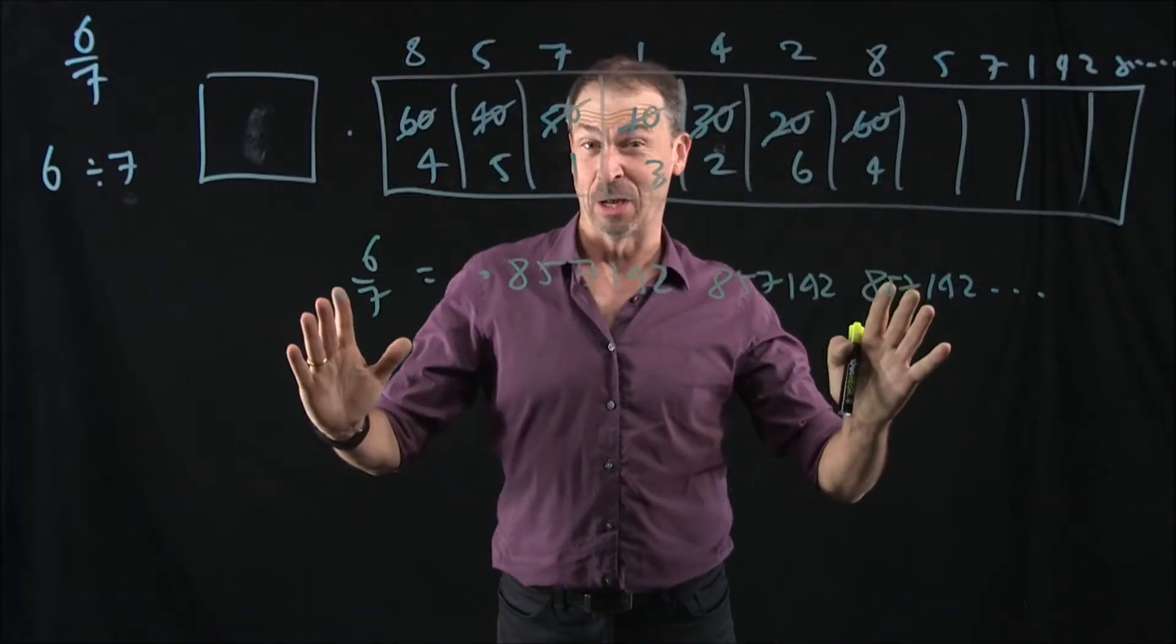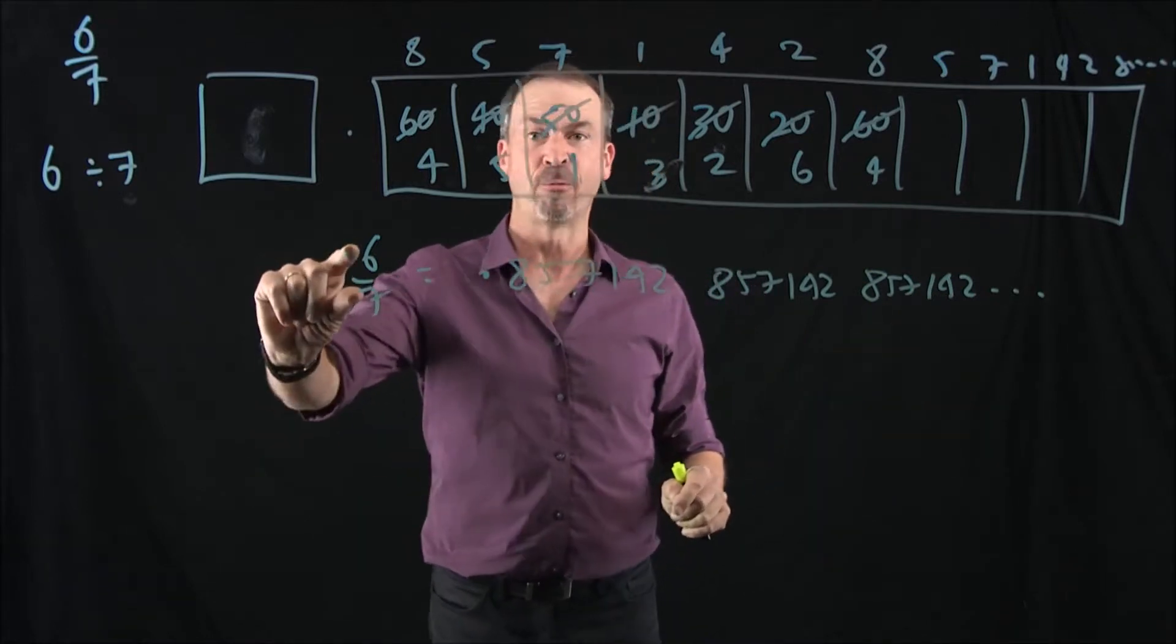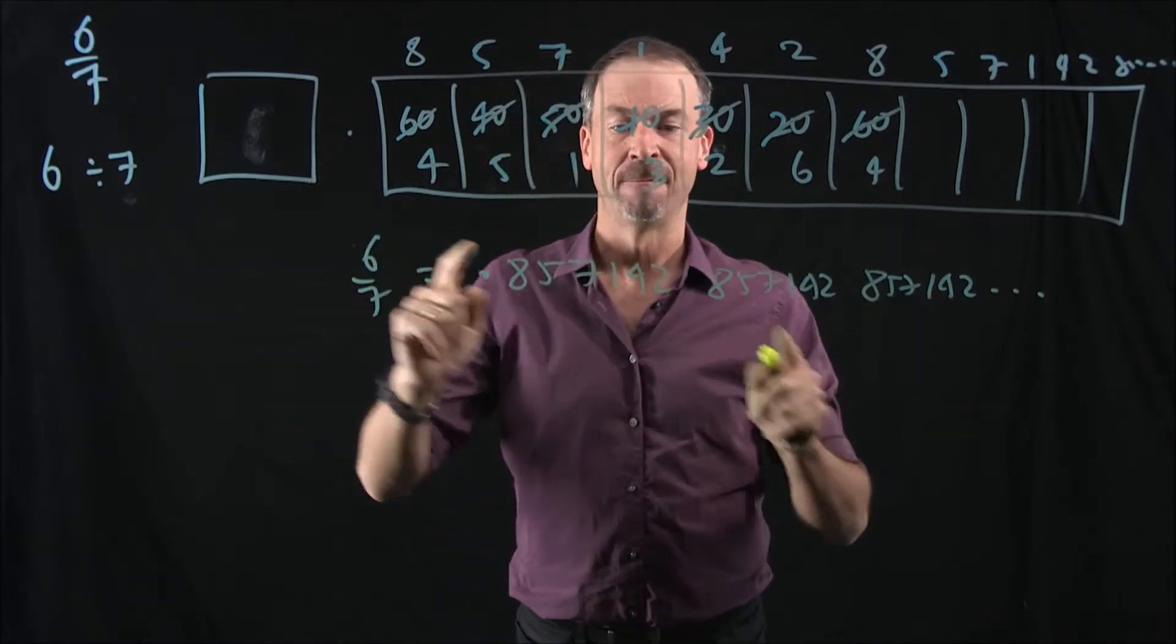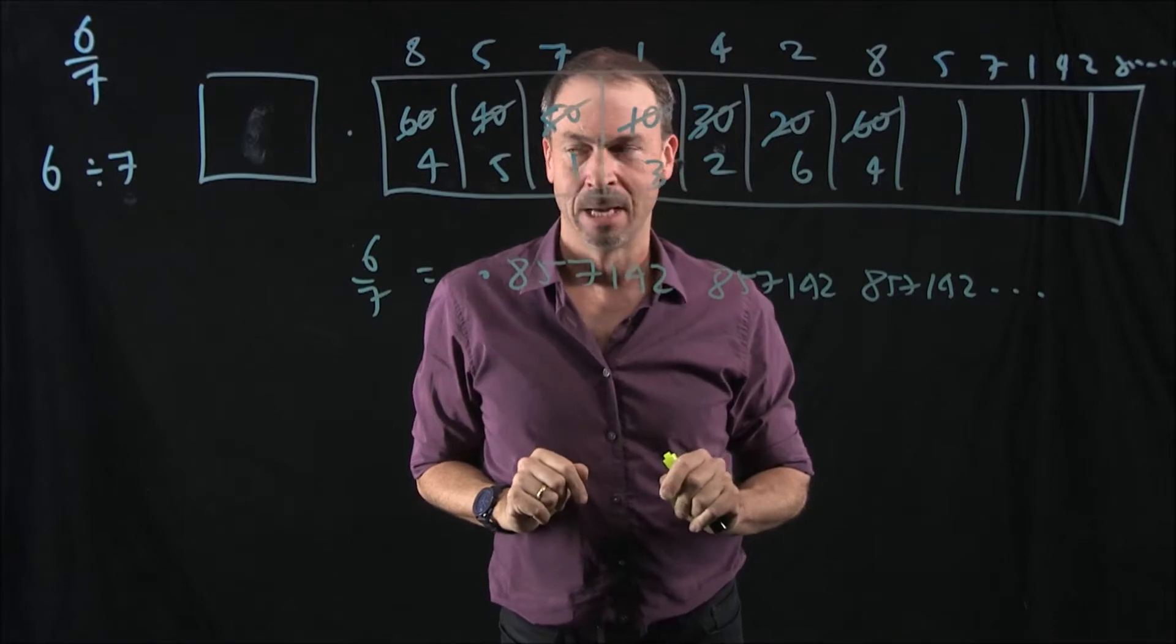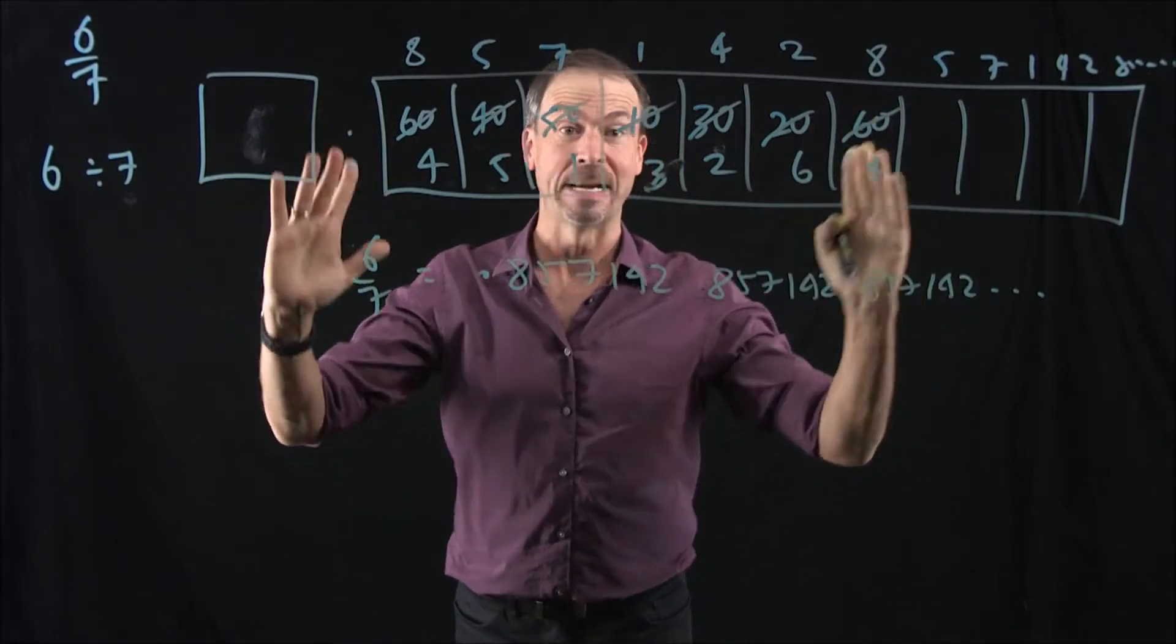Okay, we're at a very interesting philosophical point right now. The question at hand is, is it true that every fraction, when converted to a decimal, falls into a repeating pattern? The answer turns out to be yes, and we can kind of see why right now.